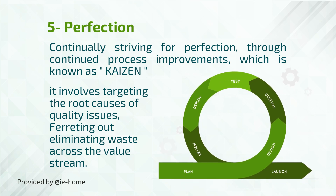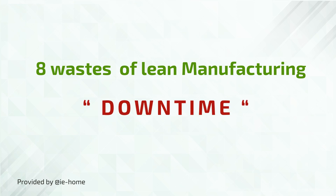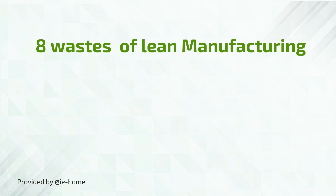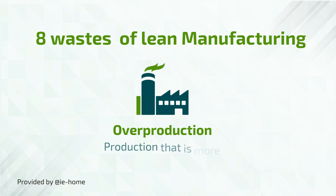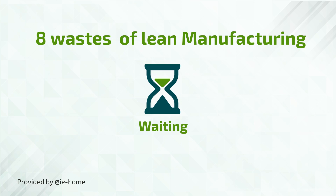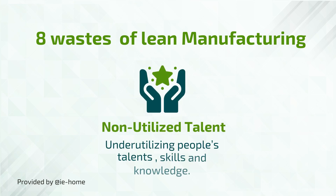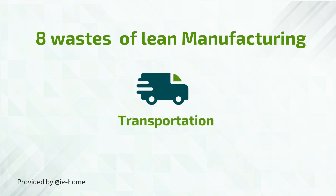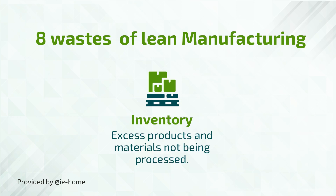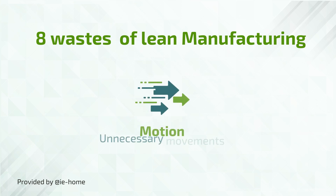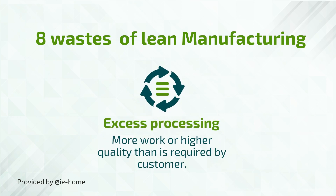Now let's talk about an essential part of lean manufacturing: the 8 wastes. You can recall them easily by the acronym DOWNTIME. D — Defects: efforts caused by rework, scrap, and incorrect information. O — Overproduction: production that is more than needed or before it is needed. W — Waiting: wasted time waiting for the next step in a process. N — Non-utilized talent: under-utilizing people's talents, skills, and knowledge. T — Transportation: unnecessary movements of products and materials. I — Inventory: excess products and materials not being processed. M — Motion: unnecessary movements by people, such as walking. E — Excess processing: more work or higher quality than is required by the customer.